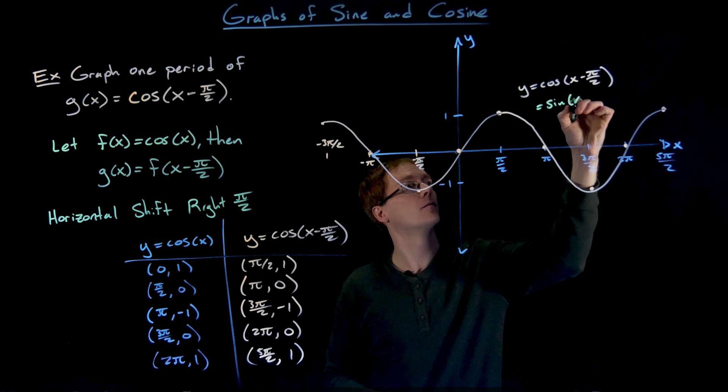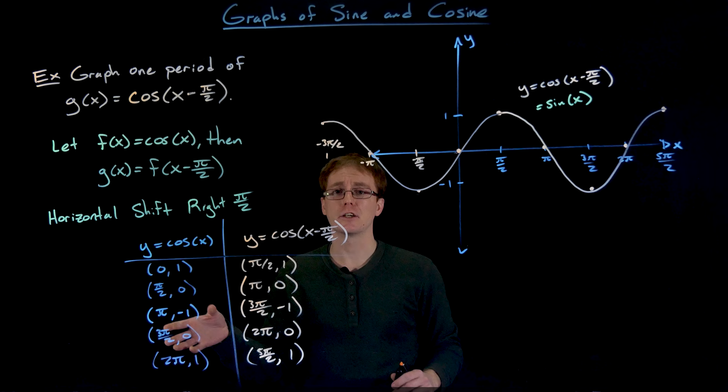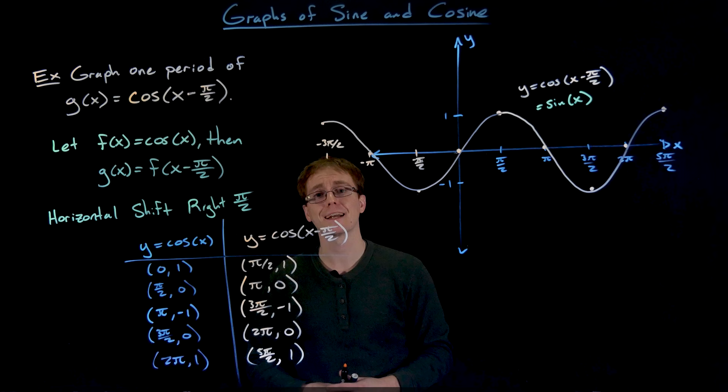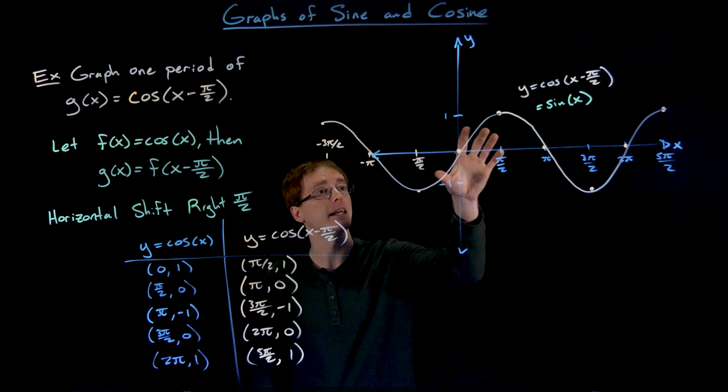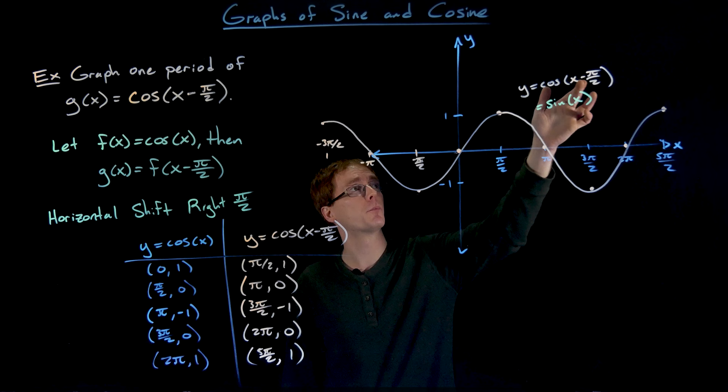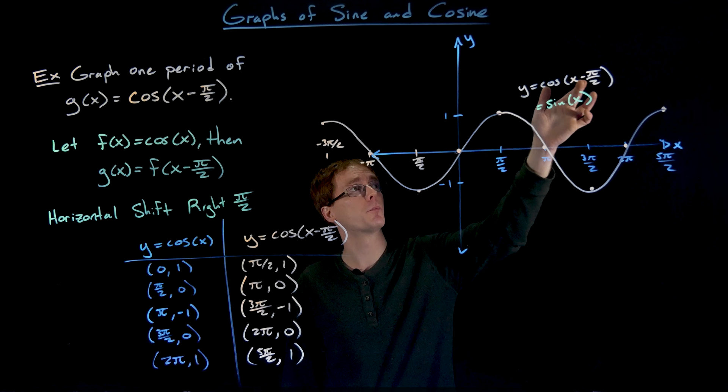Earlier we kind of made that observation that the outputs of our sine and cosine function are the same, just kind of happening in different orders for different inputs, and what we can recognize is really they are just horizontally shifted versions of each other. If we take our sine function and shift it to the left π over 2 units we end up with our cosine function, and as we see here, if we take our cosine function and shift it to the right π over 2 units we end up with our sine function.